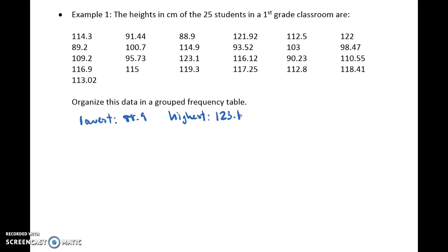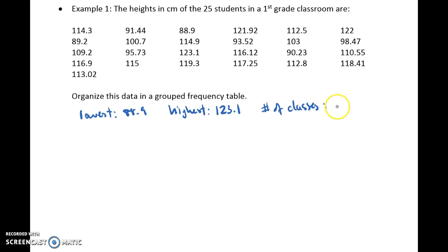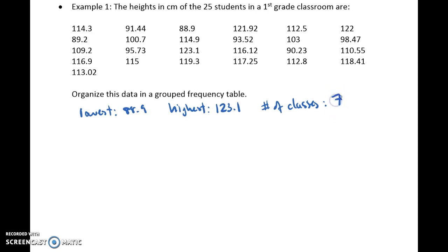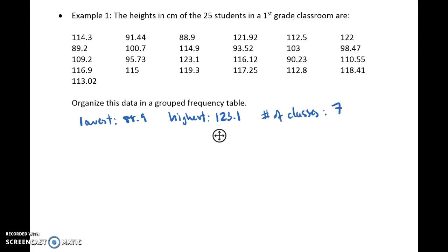So what I want to do is I want to figure out what number of classes or groups do I want. This is up to you. Again, anywhere from 5 to 15, I usually try to aim for about 6, 7, 8-ish. So let's go ahead and let's say 7.